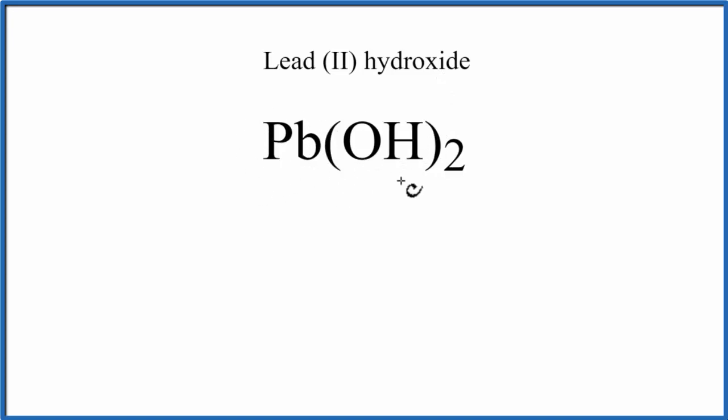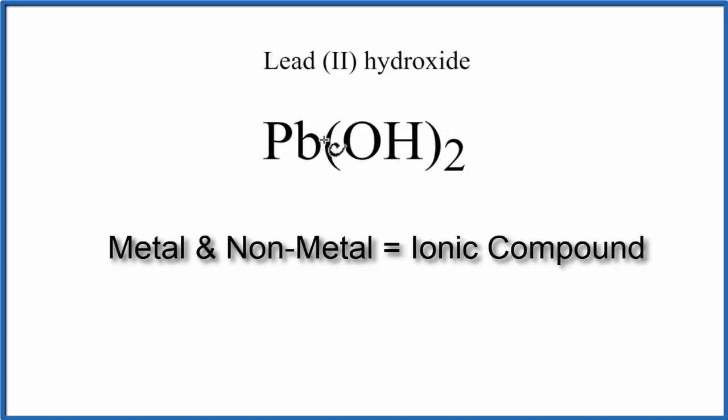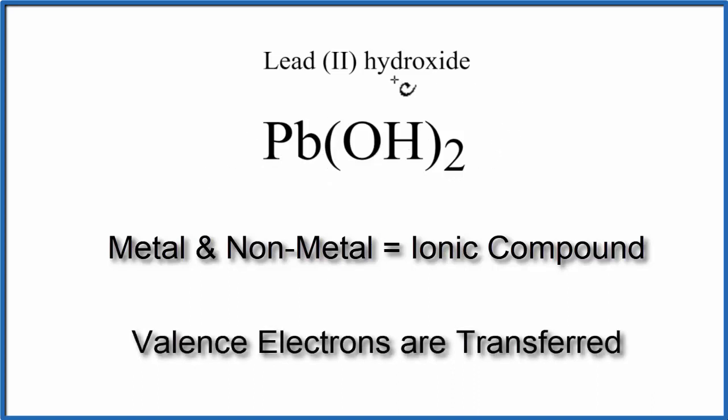Because we have a metal and nonmetals, this is an ionic compound, and the metal will transfer electrons to the nonmetals.